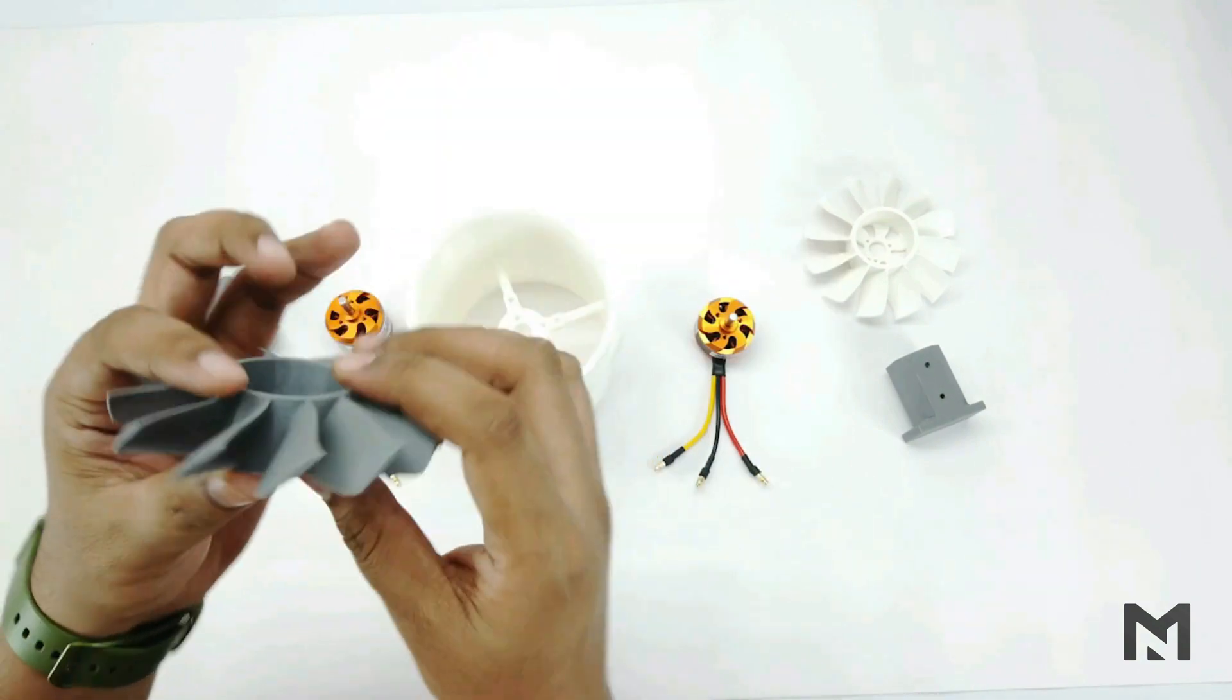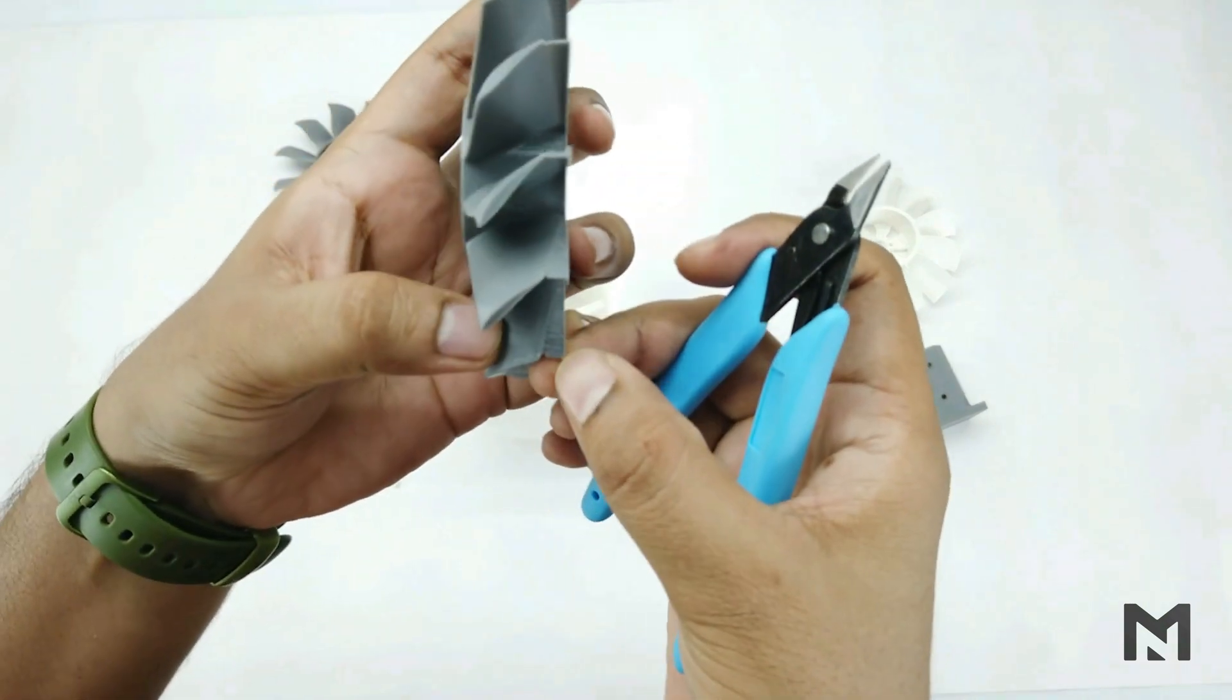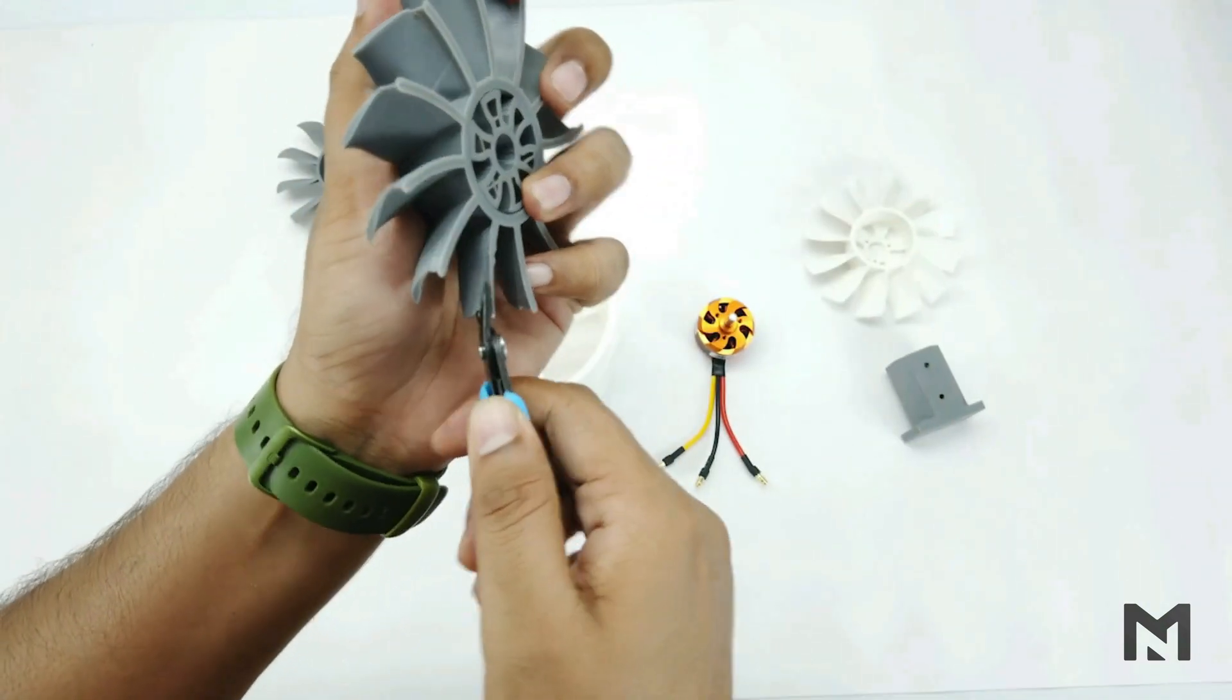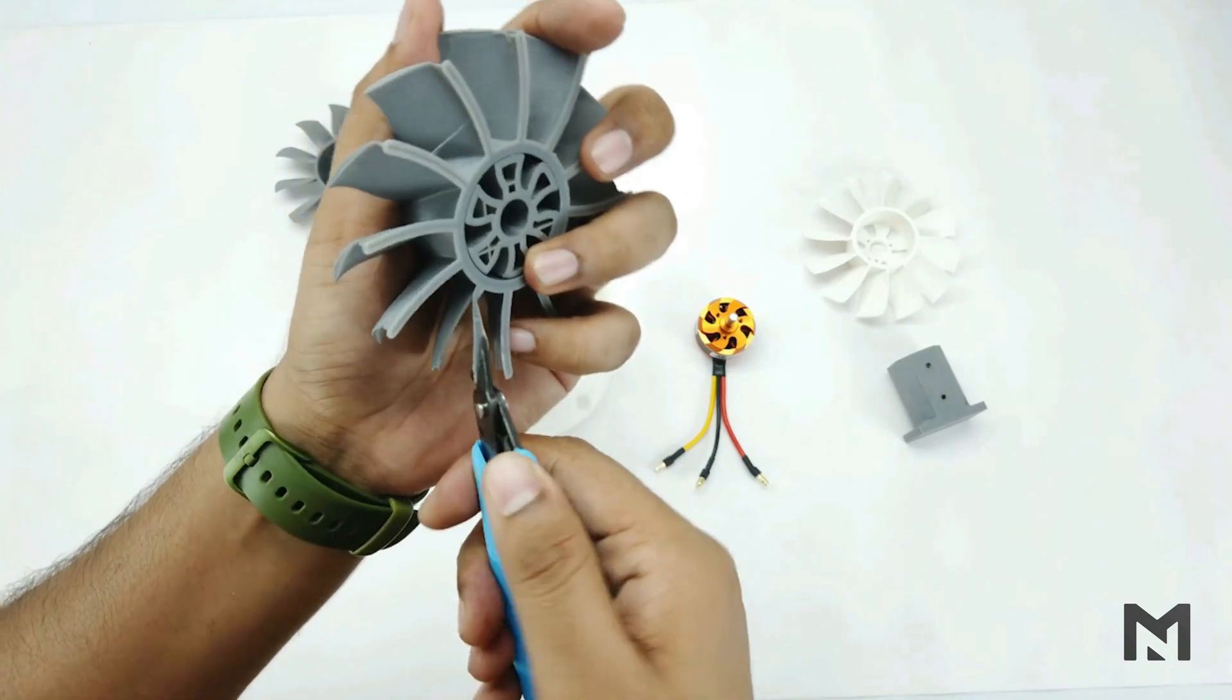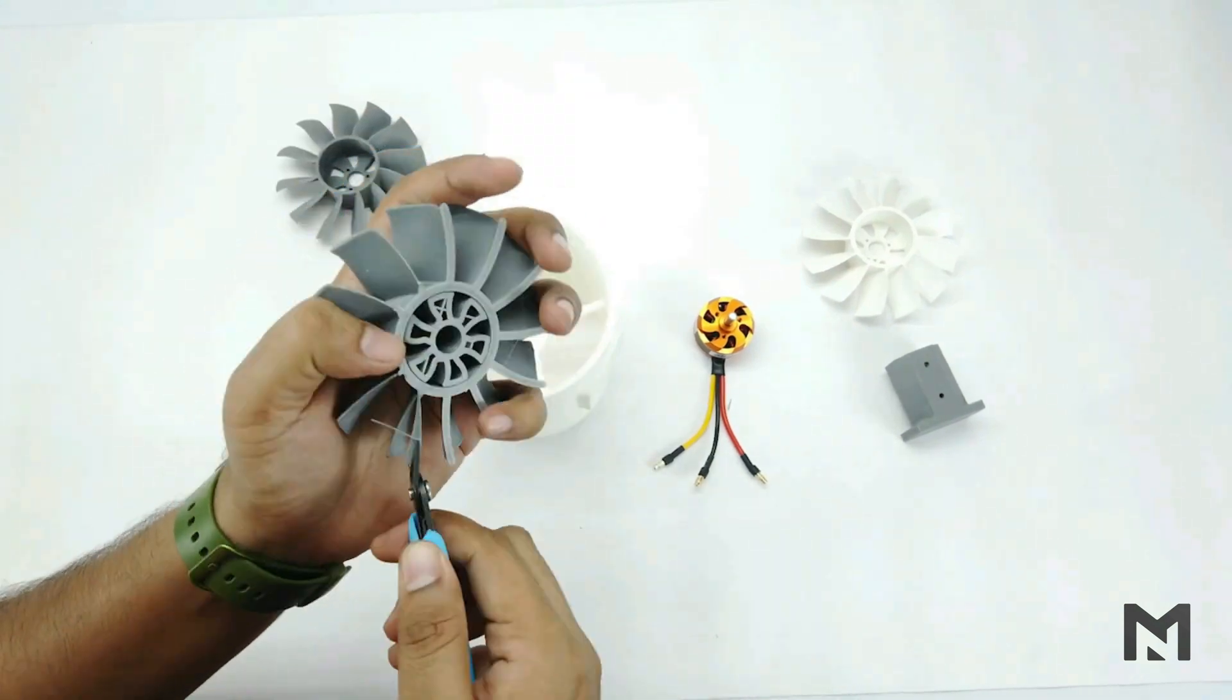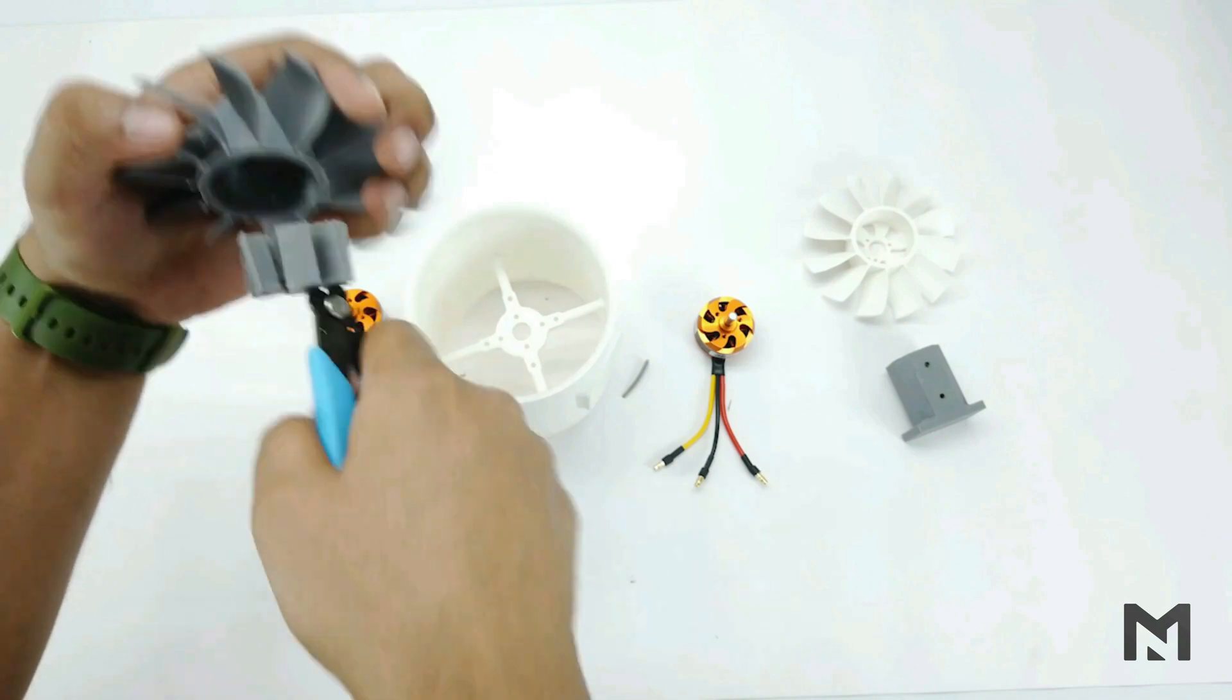All these parts are printed while using support. Remove the supports by peeling it from the separation edge. And then cut the extra parts. Switch the center part and it will come out easily.